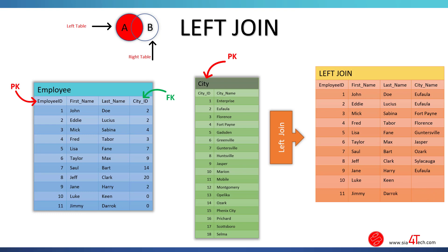The result will be 11 employees with two city fields empty, because those two cities have not been assigned to those two employees. Now let's go to SQL Studio and see how to write a left join query and how to see the result in practice.